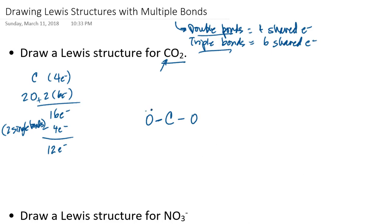That would be 1, 2, 3, 4, 5, 6, 7, 8, 9, 10, 11, 12 electrons. Notice I've already used up all of my electrons but each oxygen does obey the octet rule because there are eight electrons around each oxygen. But notice that carbon only has the two electrons from each of the single bonds for a total of four electrons.